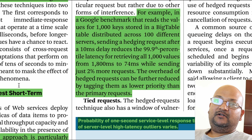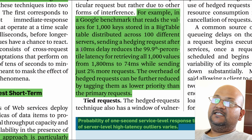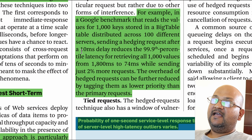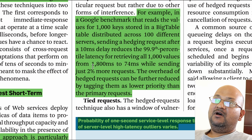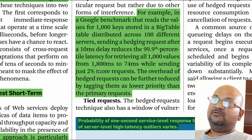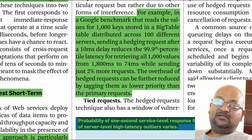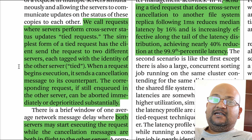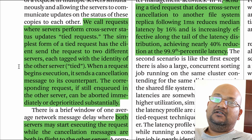The authors provide data from Bigtable, one of the distributed storage systems Google uses. In one benchmark, waiting 10 milliseconds before issuing a second hedged request reduced the 99.9th percentile latency from about 1.8 seconds to 74 milliseconds, at a cost of only about 2% more requests. So you've increased load almost negligibly but gotten a huge reduction in tail latency. You can make cancelling these hedged requests even faster and more efficient using a technique called tied requests.